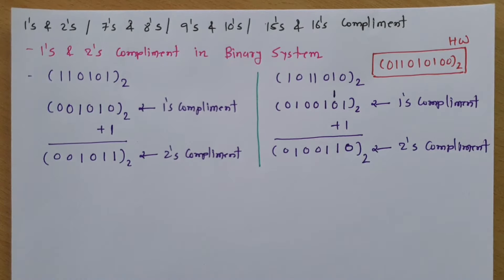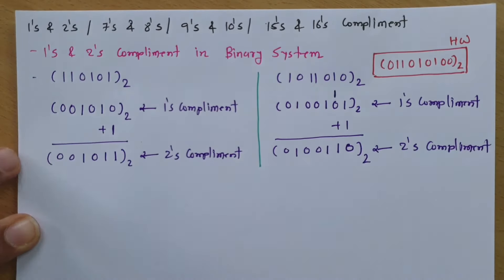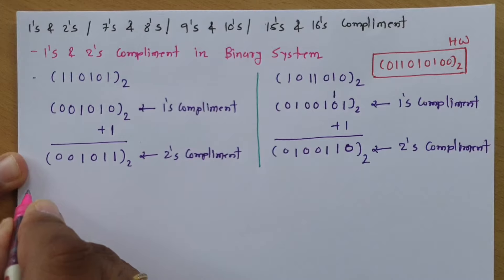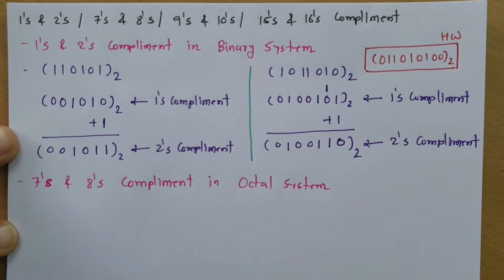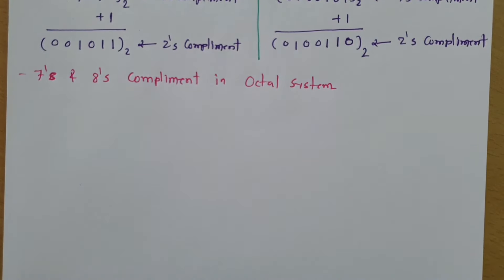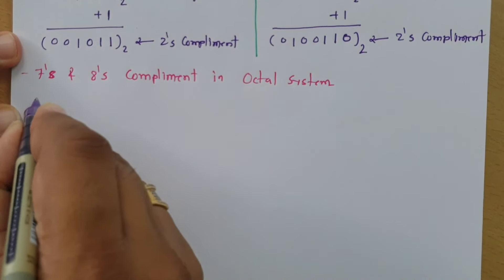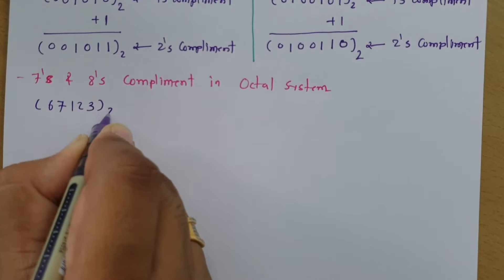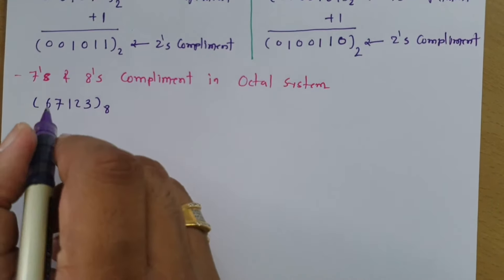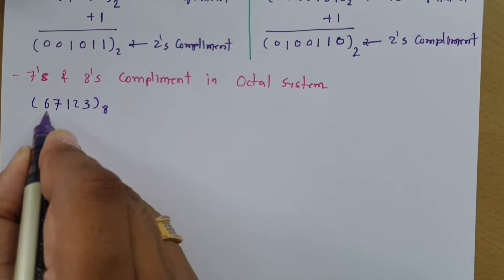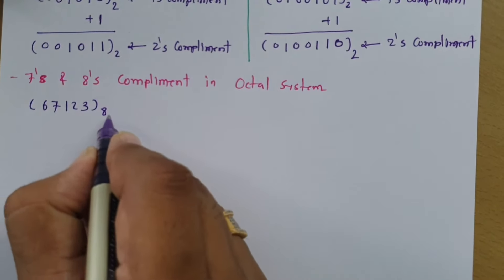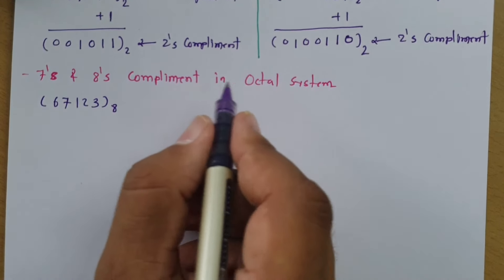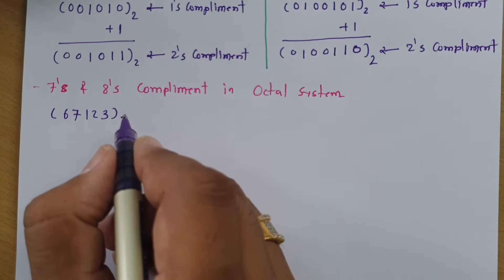Now let's solve a problem based on 7's and 8's complement. 7's and 8's complement are calculated in the octal number system. In the octal system the base is 8, and the highest digit is base minus 1, which is 7. So octal digits range from 0 to 7, and the highest digit is 7.